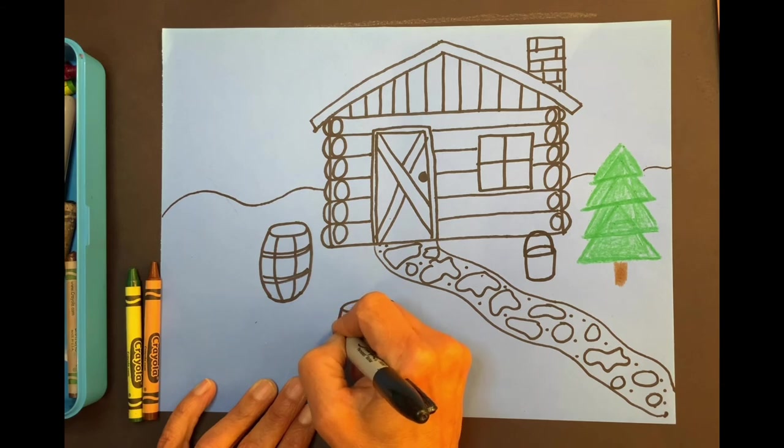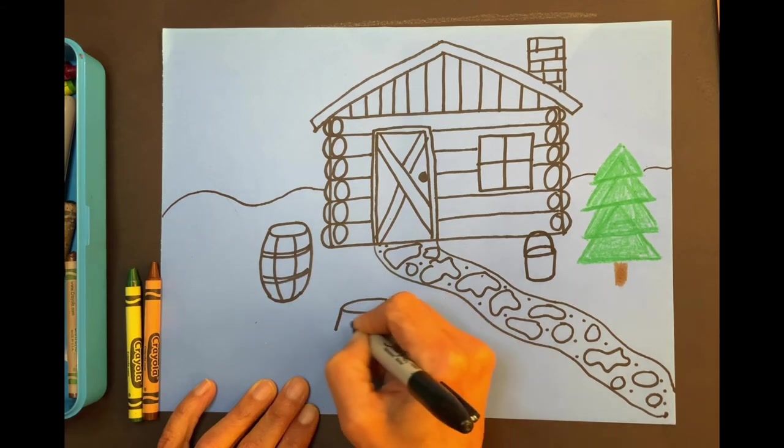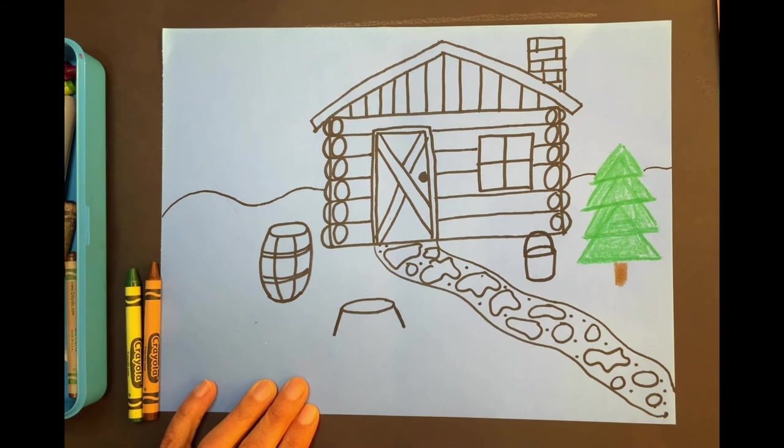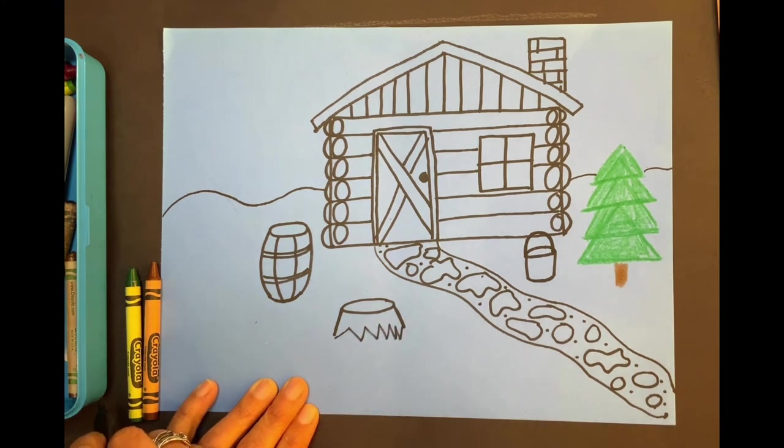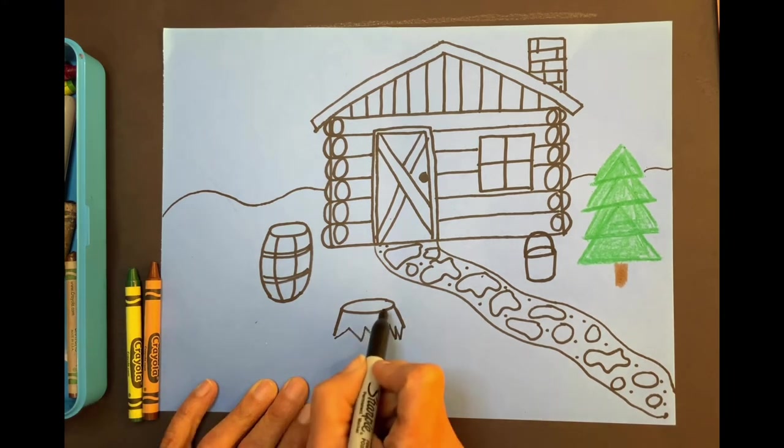And then we'll make the sides. We'll do these a little more diagonal. Kind of short, like this. Now this time we're going to show the roots of the tree. So I'm going to do a zigzag, like this. So there's the tree that was cut.